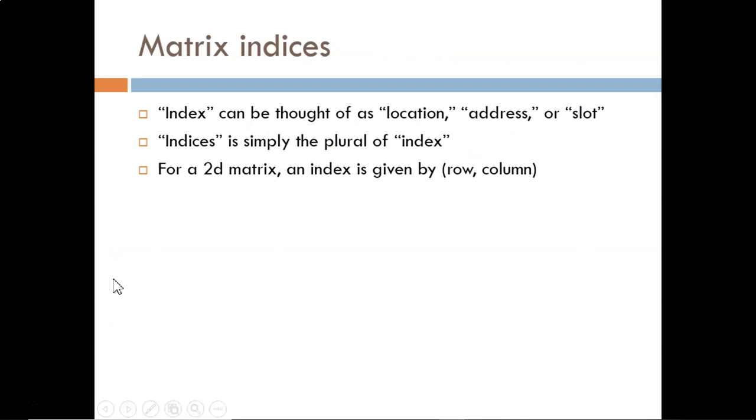First, let's deal with individual indices. Indices is simply the plural form of index. An index can be thought of as location, address, or slot within an array. For a 2D matrix, an index will usually be given as the row index followed by the column index.